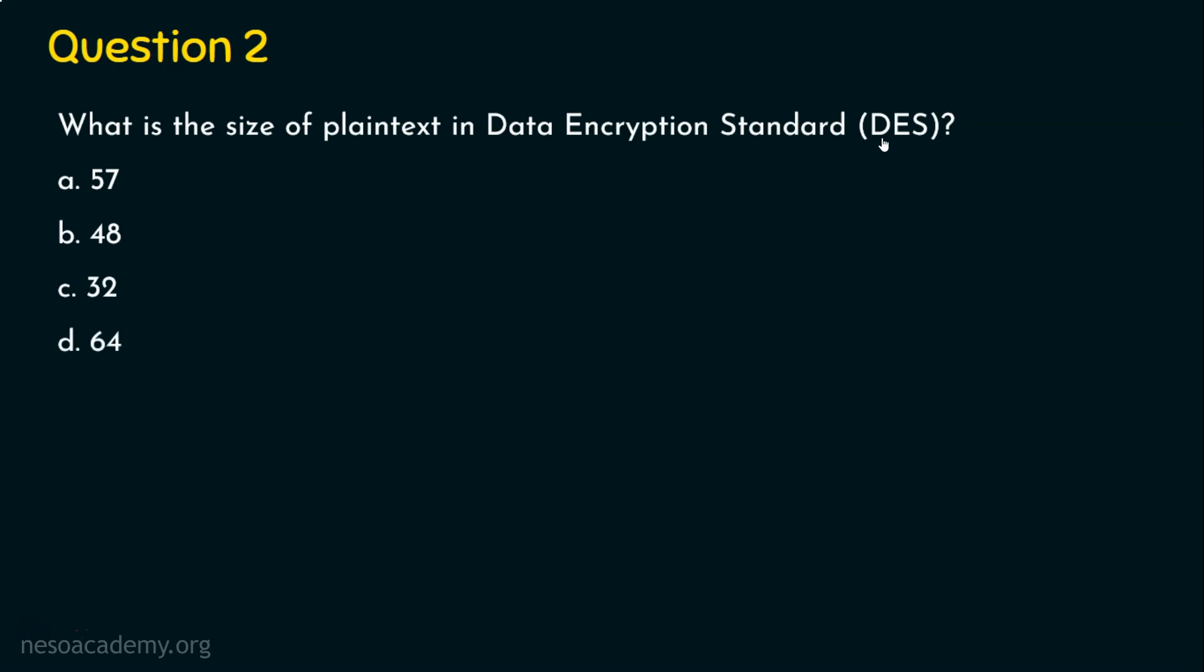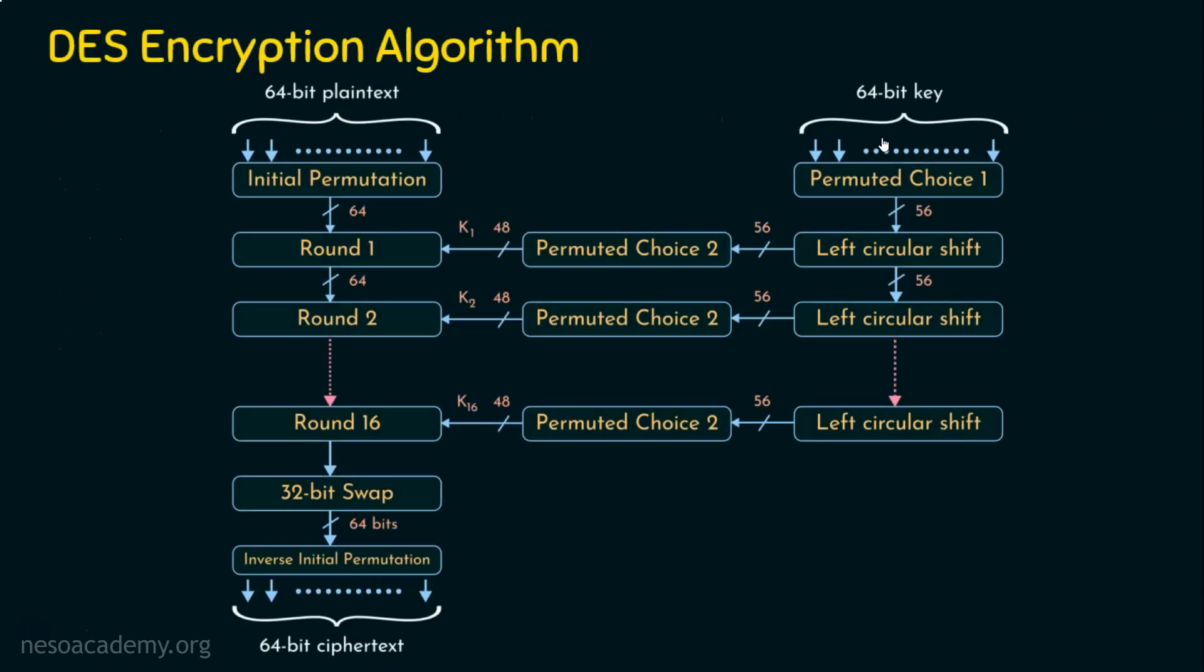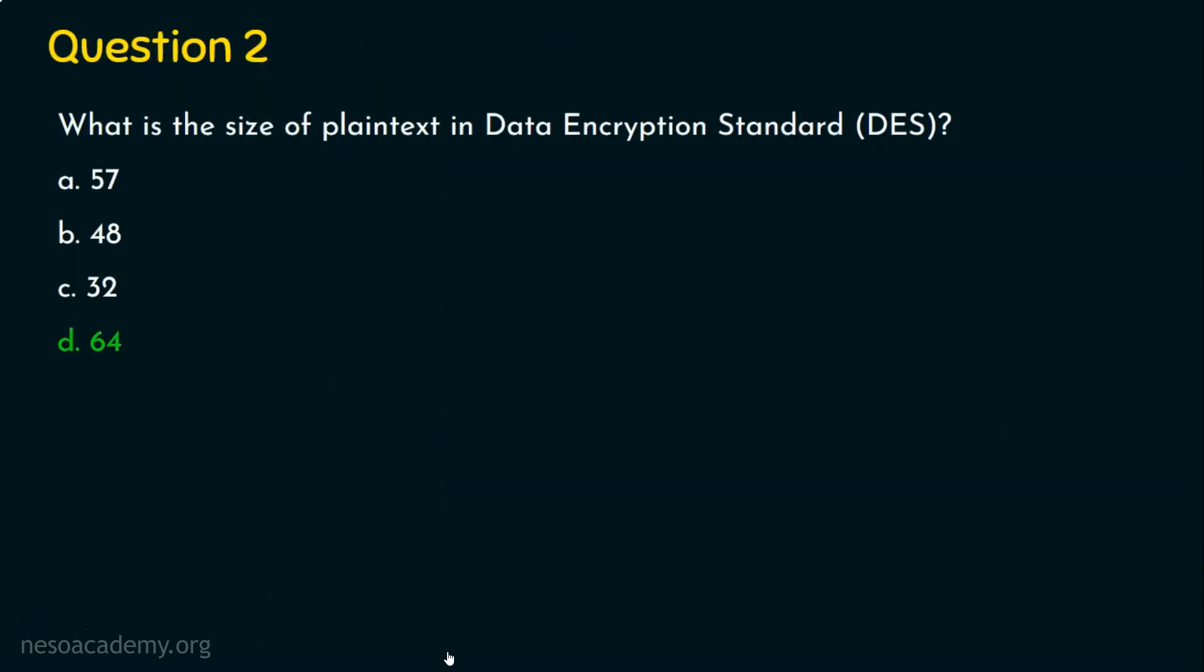This is a straightforward question. If you look at the data encryption standard algorithm, we can confirm that the input is of 64 bits and the output is also of 64 bits. In other words, the plain text which is of 64 bits in nature, this 64 bits plain text is going to be converted into 64 bit ciphertext as the output. The right answer for this question is option D, 64.